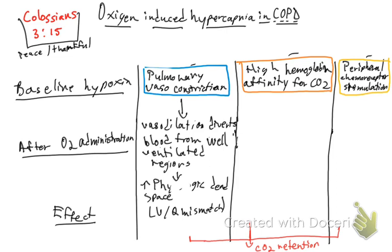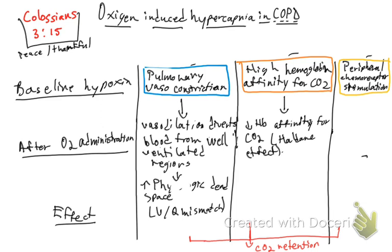Now if you have high hemoglobin affinity for CO2 — the second mechanism — in the baseline hypoxic state, hemoglobin has a high affinity for CO2. But after oxygen administration, you decrease your hemoglobin affinity for CO2. This is called the Haldane effect. This causes an increase in blood PCO2, which eventually leads to CO2 retention.